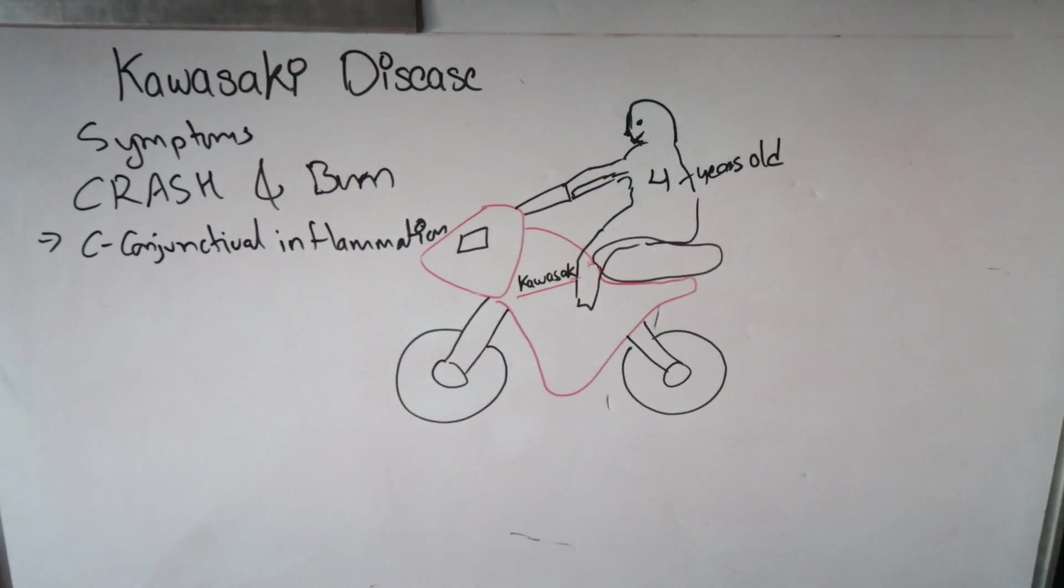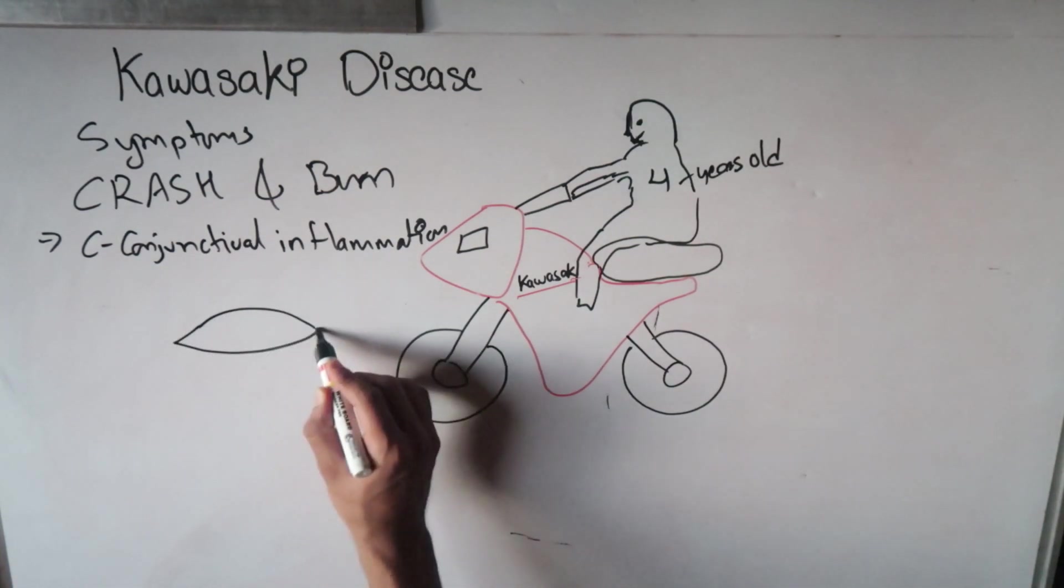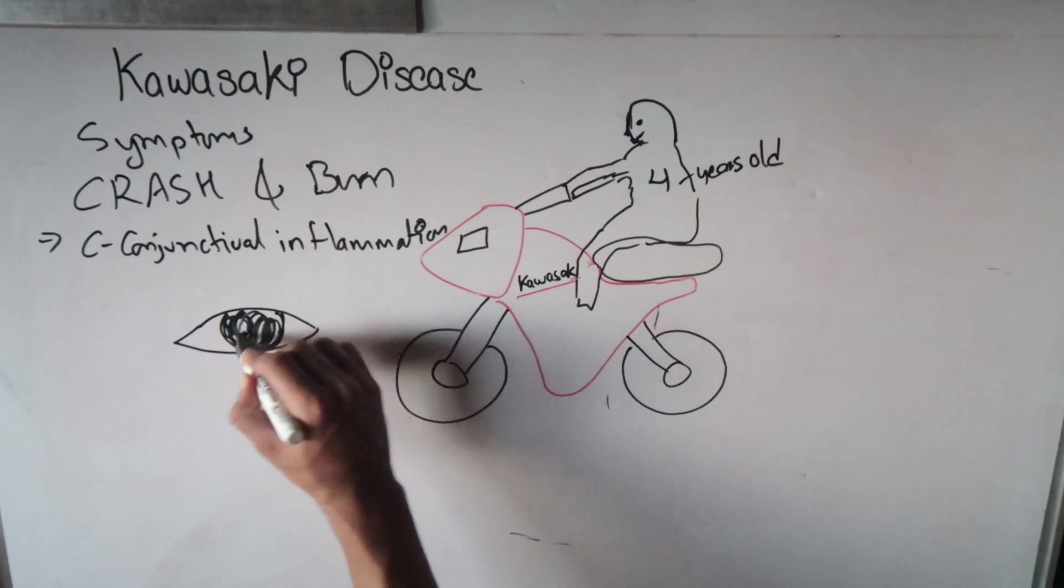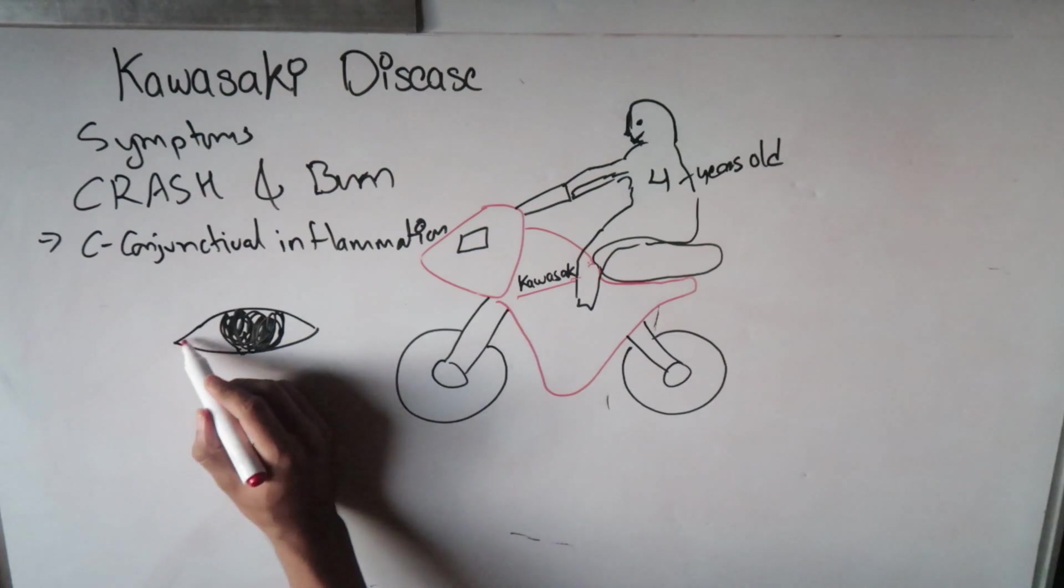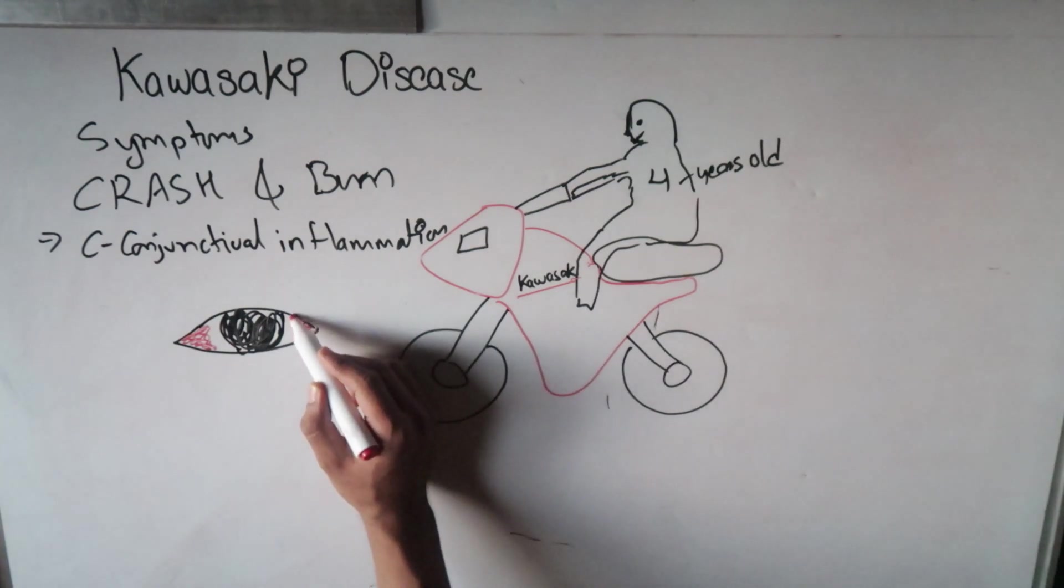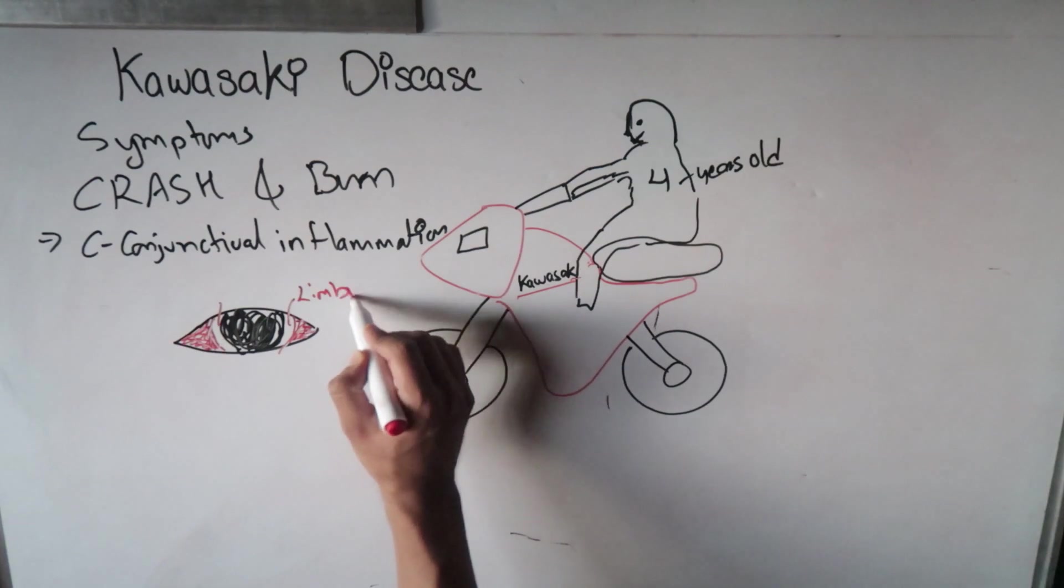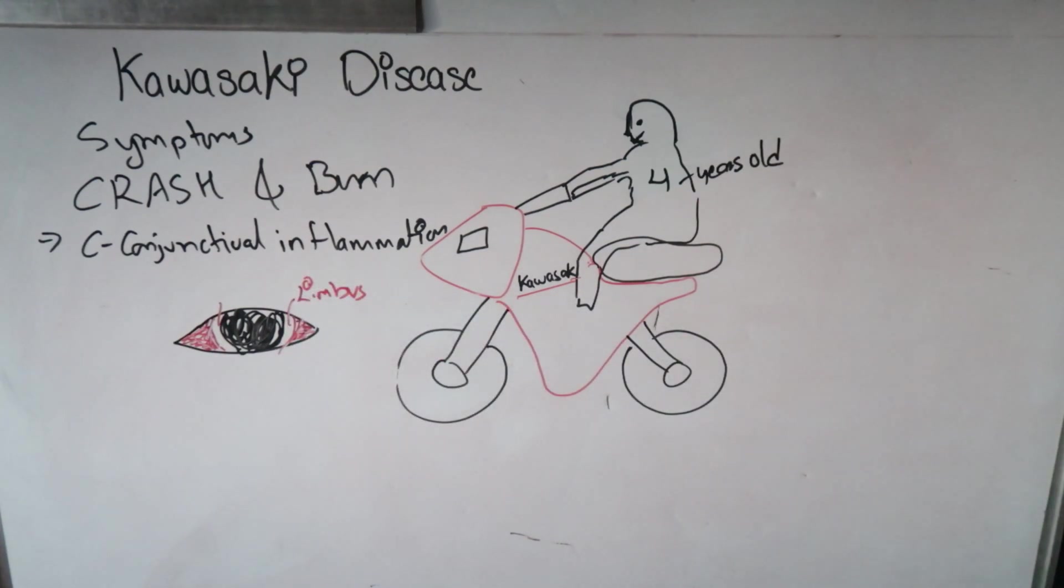C refers to conjunctival inflammation where there are red eyes but with sparing of the limbus. What really happens is, if this is the eye and I'm drawing the eye, this is the iris. In Kawasaki disease there is redness all over the conjunctiva, but there will be sparing of this region. This region is the limbus of the eye. This will appear as white, so there is limbus sparing. The first symptom is conjunctival inflammation with limbus sparing.